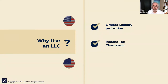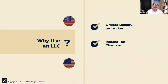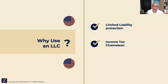The LLC is a chameleon for income tax purposes. If I'm a single-member LLC doing consulting, it's treated as a disregarded entity, but I can elect to tax the LLC as a different kind of entity. A disregarded LLC can elect to be treated as a C-corporation or an S-corporation. And if you have two or more members, the default is partnership treatment, but that LLC can also elect to be treated as an S-corporation or a C-corporation. There's tremendous flexibility — the LLC truly is a chameleon for federal income tax purposes.